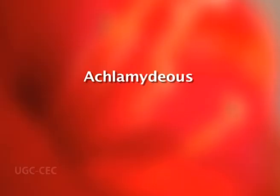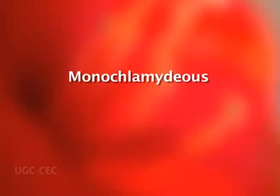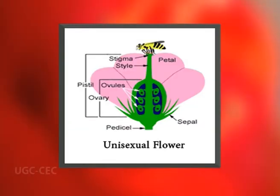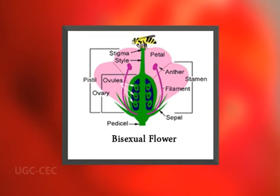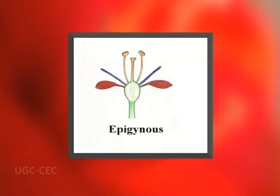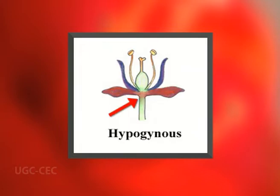Flowers without perianth (achlamydeous) or those with one whorl of perianth (monochlamydeous) were considered primitive, and those with two whorls of perianth distinguished into sepals and petals were considered advanced. Unisexual flowers were considered more primitive than bisexual ones. Cleistogamy was considered a more primitive character. The epigynous condition is more advanced than the hypogynous condition. Apocarpy is regarded as a primitive feature and syncarpy as an advanced feature.